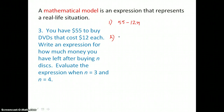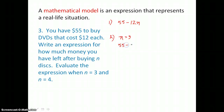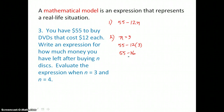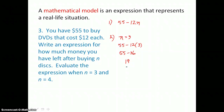In the second part, we evaluate when N equals 3, meaning we purchase 3 discs. So 55 minus 12 times 3: using order of operations, we multiply first, so 12 times 3 is 36, giving us negative 36. We add the opposite — negative 36 to positive 55 — and get 19. So we have $19 left when we buy those 3 discs.